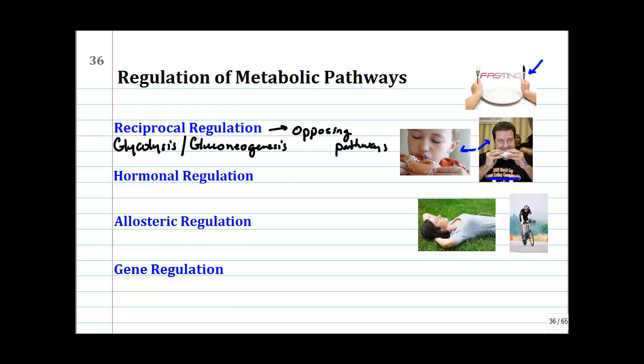We'll talk about how to control glycolysis versus gluconeogenesis, and we'll also talk about glycogen synthesis versus glycogen degradation — that's another example of opposing pathways that must be regulated.